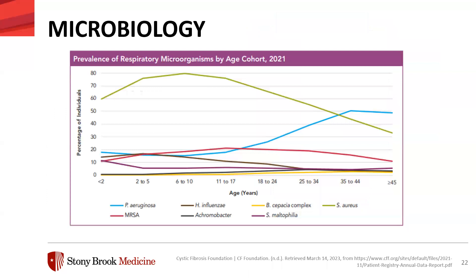This graph from 2021 — a patient annual data registry — shows the proportion of individuals in various age groups with cystic fibrosis who cultured positive for certain bacterial species. The green line at the top spikes upward early in life, indicating Staphylococcus aureus is more prevalent early in life. The light blue line is lower early in life and slopes upward later, indicating Pseudomonas aeruginosa is more prevalent later in life.